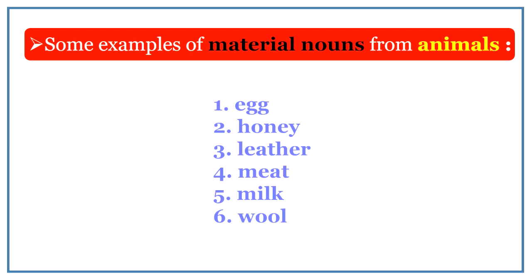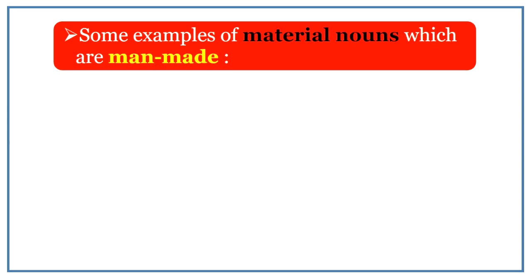Here are some examples of material nouns from animals such as egg, honey, leather, meat, milk and wool.